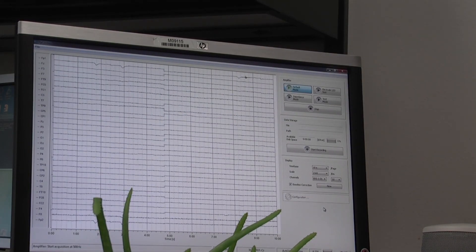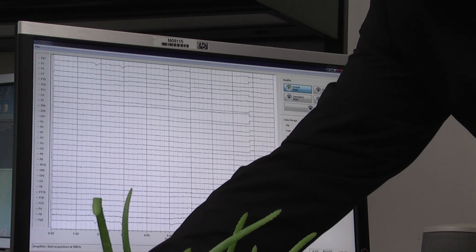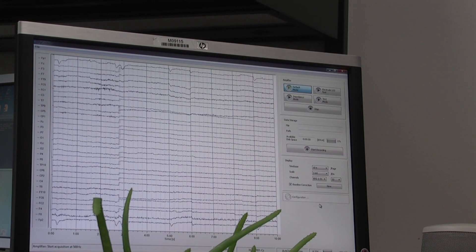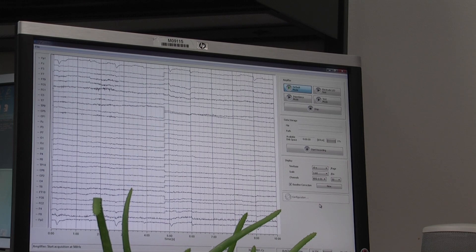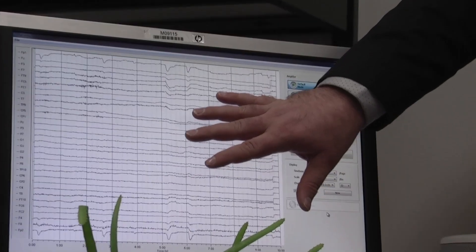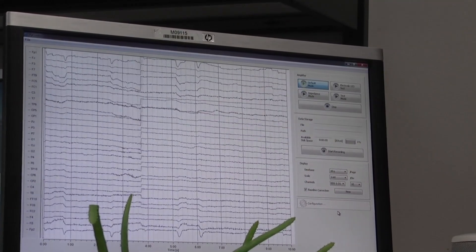So the first thing I'm going to have you do, zoom in one more. There we go. I want to show a couple of standard things that happen in an EEG. So when we're looking at an EEG, there are certain types of things that we know always happen. Allie, the first thing I want you to do is shake your head back and forth from side to side.